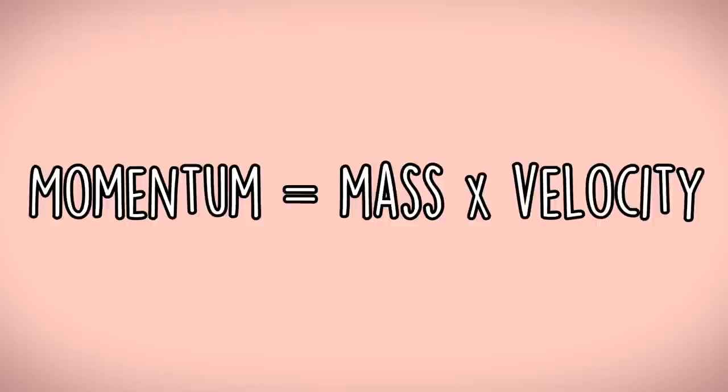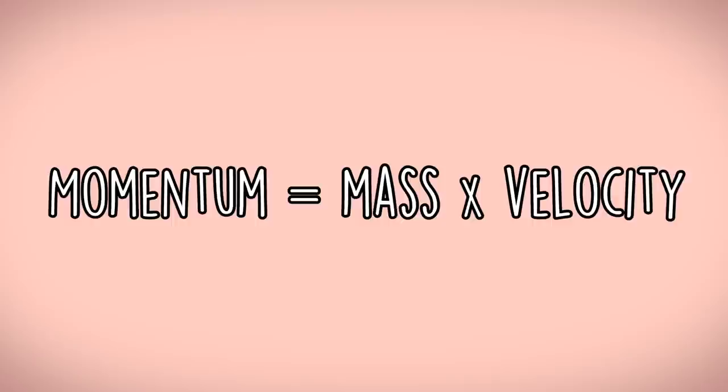So the amount of oomph something has depends on its speed, but it also depends on how massive it is. This oomph is what physicists call momentum. If we put this into equation form, we get that the momentum of an object is equal to its mass times its velocity. Momentum is usually represented by a P. So now that we've got a good idea of what momentum is, what does it mean for it to be conserved? In physics, conservation refers to a value that does not change over time.